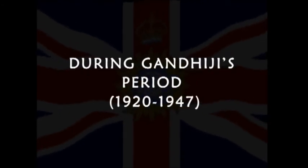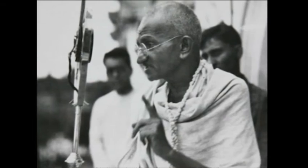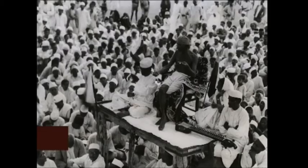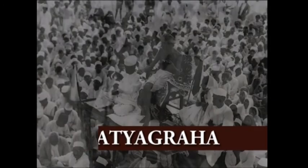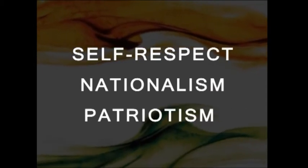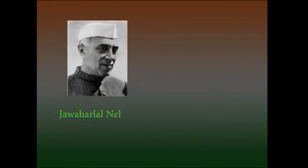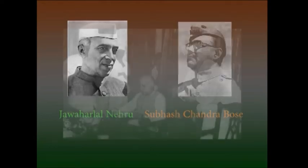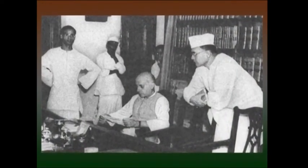During Gandhi's period, 1920 to 1947: Gandhiji condemned British rule over India as satanic. He expounded the theory of peaceful resistance — Satyagraha — to fight British laws and to achieve a meaningful life, liberty, and national independence. The right to life, liberty, and happiness as inalienable rights aroused the spirit of self-respect, nationalism, and patriotism in the hearts of Indians. Jawaharlal Nehru and Subhas Chandra Bose also emerged on the scene and advocated complete independence as the goal of the freedom movement to protect human rights of Indians.